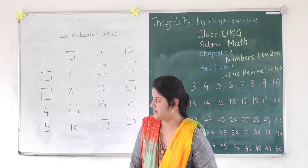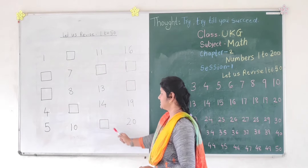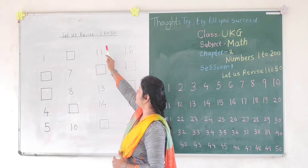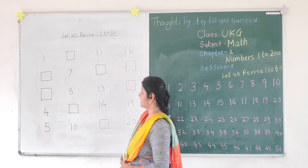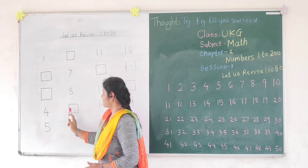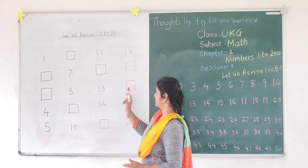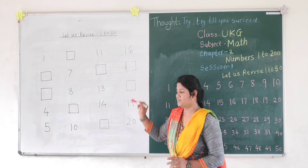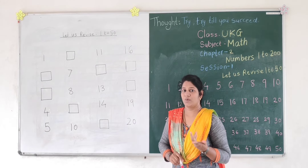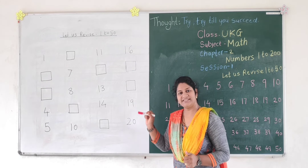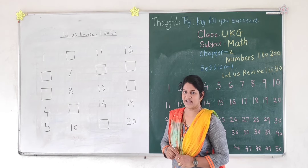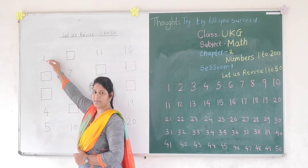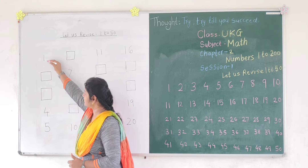Okay? Got it? Yes. Here I have drawn some numbers. Let us revise 1 to 50. I have drawn some boxes here. You know why? You have to write the missing numbers here. What you have to write? Missing numbers. Okay, so let us start.